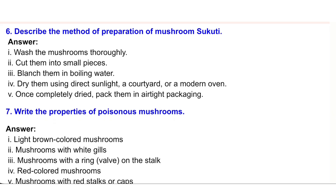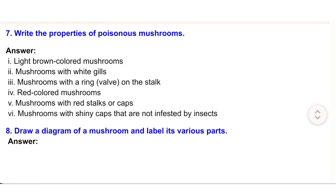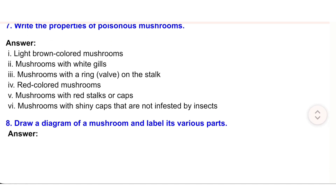7. Write the properties of poisonous mushrooms. Answer: (i) Light brown colored mushrooms. (ii) Mushrooms with white gills. (iii) Mushrooms with a ring or valve on the stalk. (iv) Red colored mushrooms. (v) Mushrooms with red stalks or caps. (vi) Mushrooms with shiny caps that are not infested by insects.